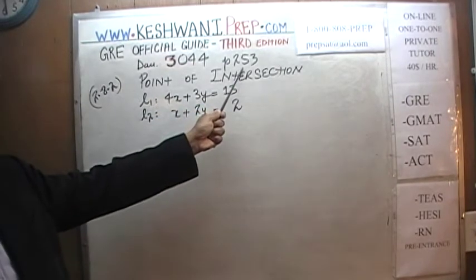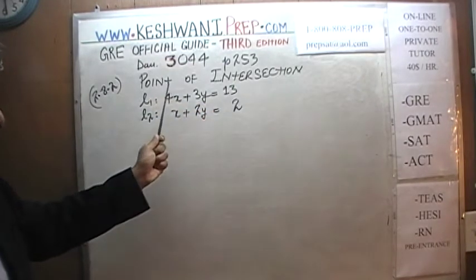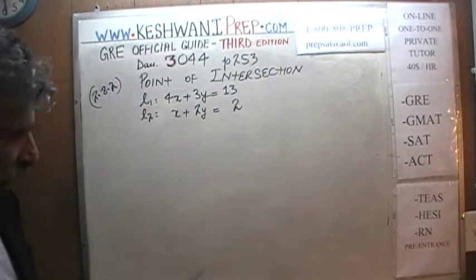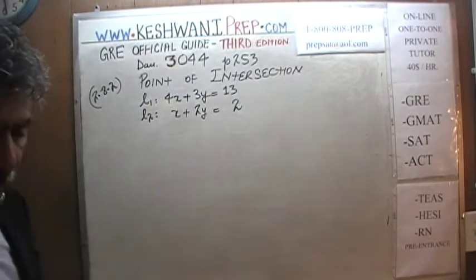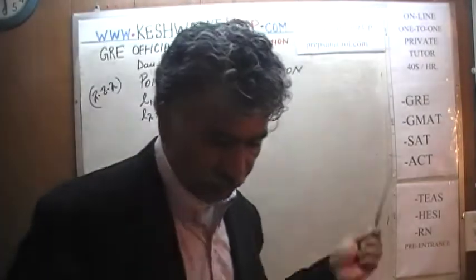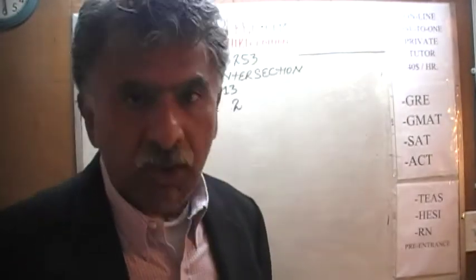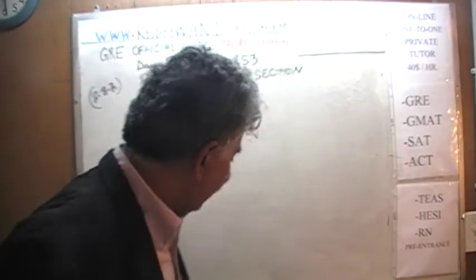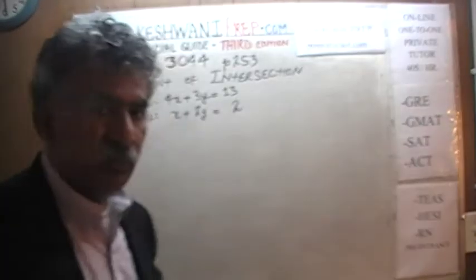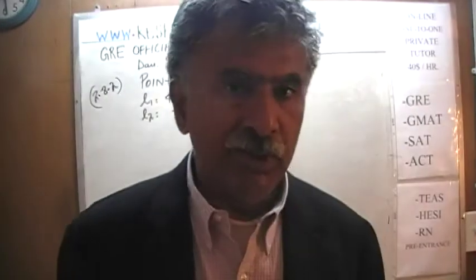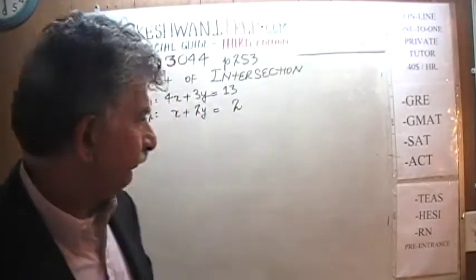We are on page number 253. Today we will discuss point of intersection. We are given the equations of two lines as you can see clearly on the blackboard. Our job is to figure out where do these two lines cut each other — where do they intersect, where do they meet? Let's find out, shall we?